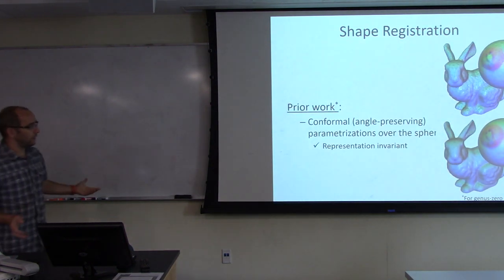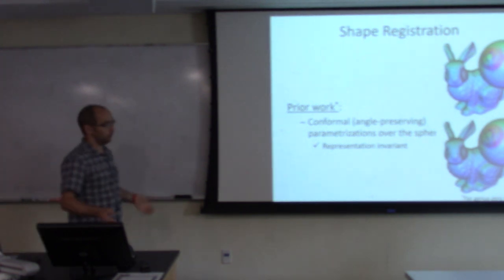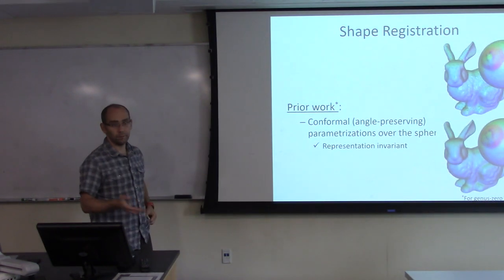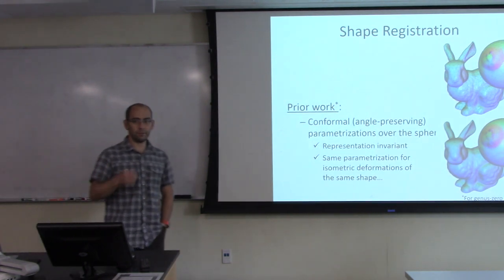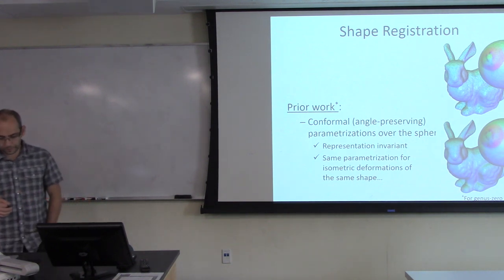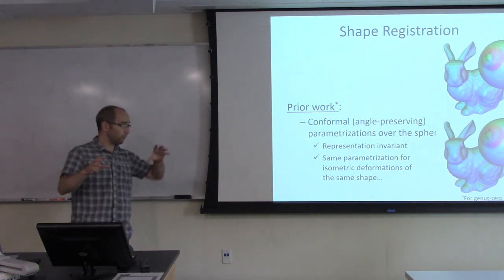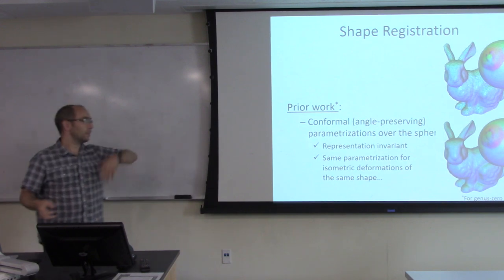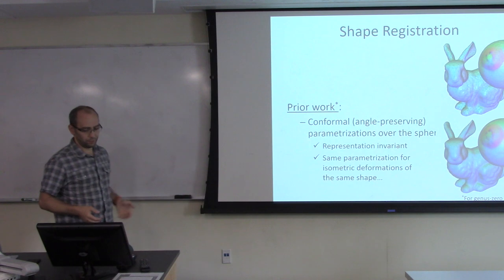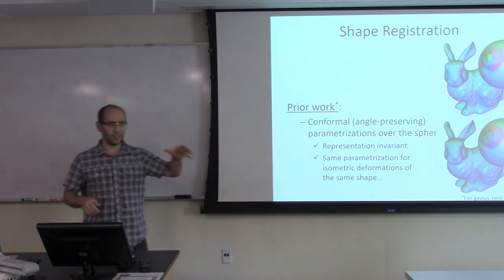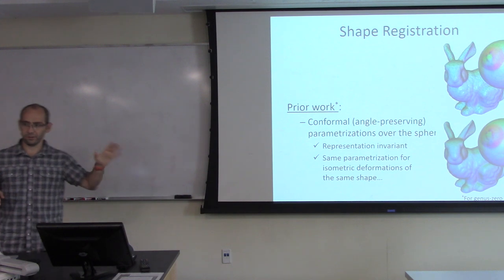This is good because it gives us a mapping of our geometry — assuming genus zero, which is all we'll talk about today — to a canonical domain, in this case a sphere. For every point on the sphere, we have a mapping telling us where it came from on the surface. In fact, if you're looking at deformations that preserve isometric structure, this has the nice property that you'll get the same parameterization. If you took the bunny and isometrically deformed it, you'd get exactly the same parameterization over the sphere — it mods out by this deformation, almost.